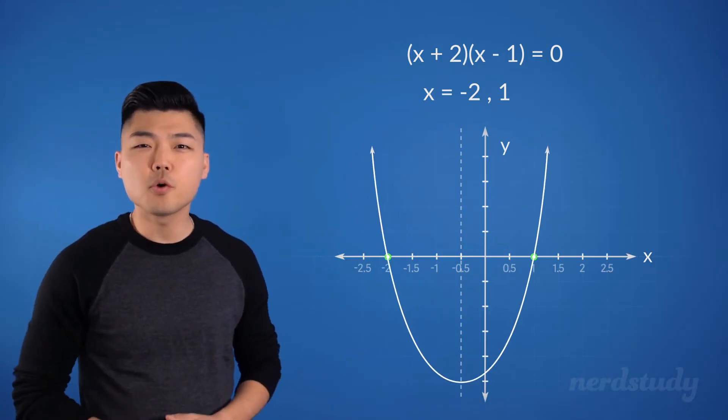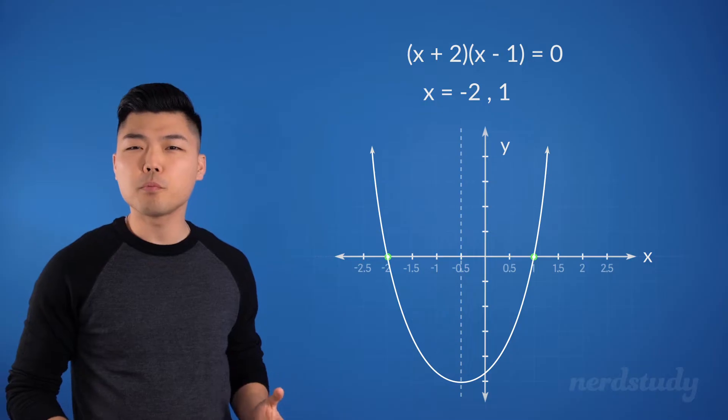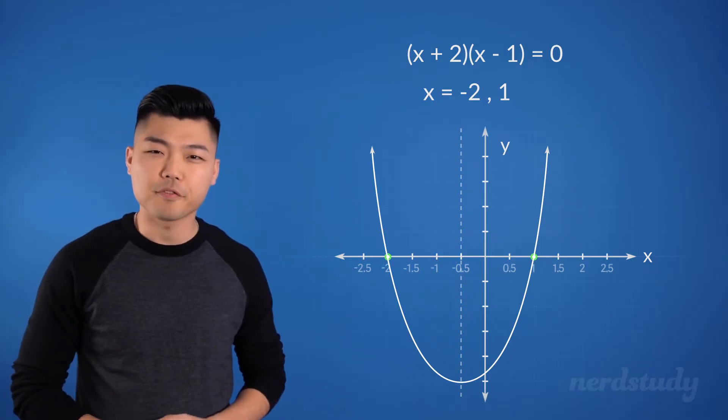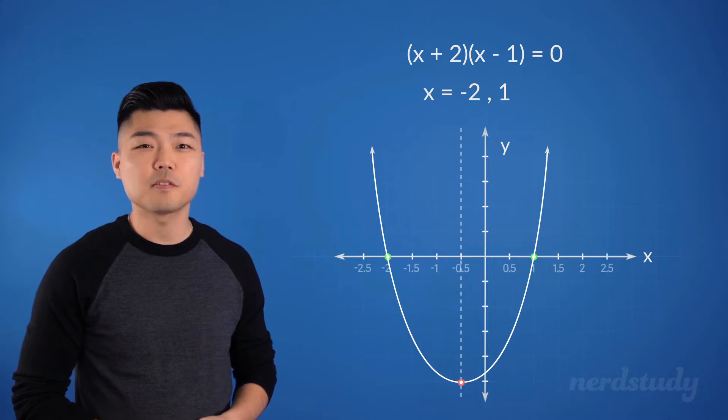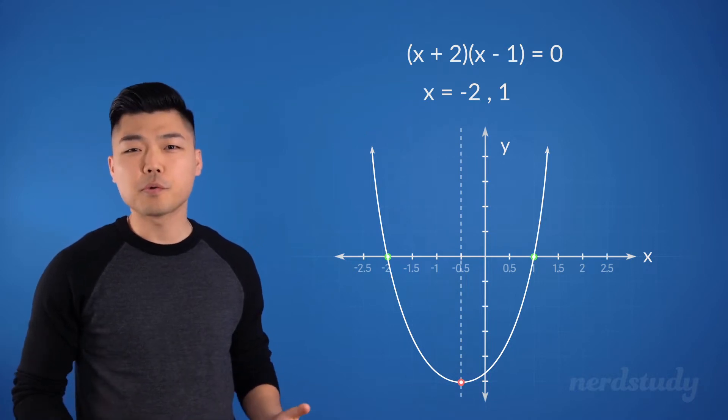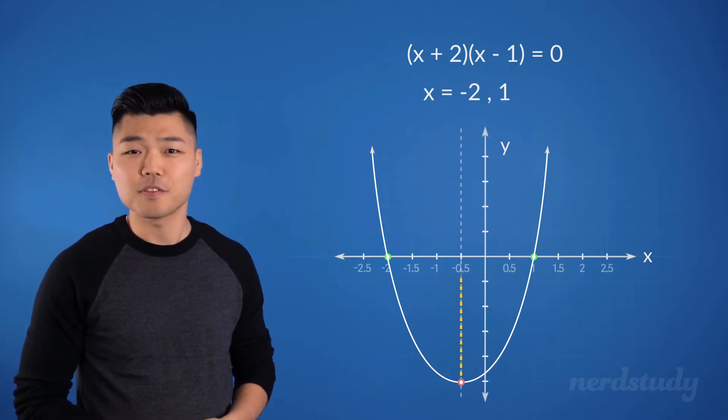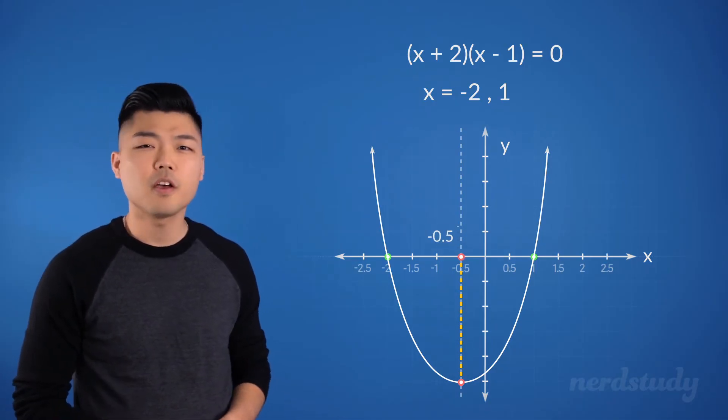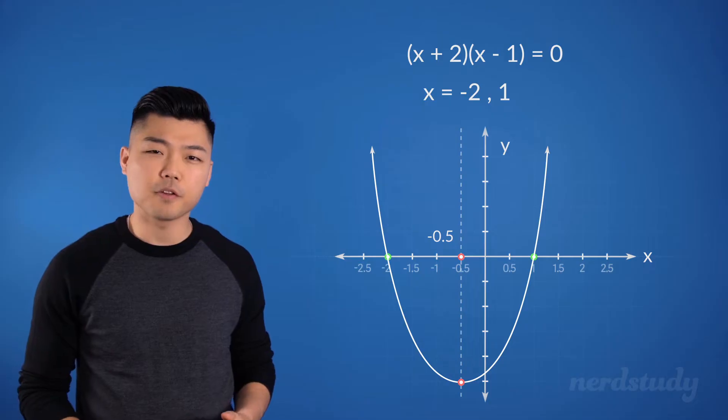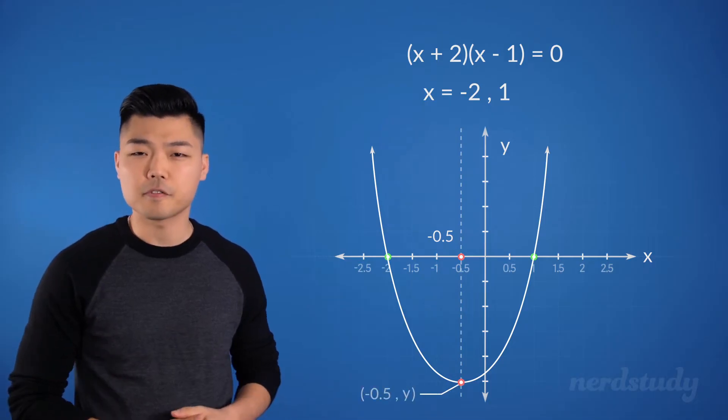Now, we just need to know where the vertex is, and we would more or less be able to sketch the graph. Well, we know the vertex needs to be on the axis of symmetry. Since we already know that the vertex lies on the axis of symmetry, which is on negative 0.5, then we know that the x value for the vertex is negative 0.5.